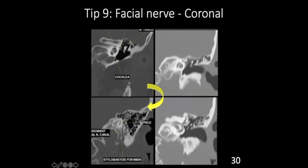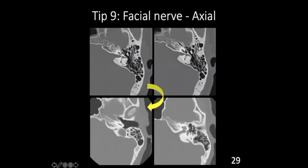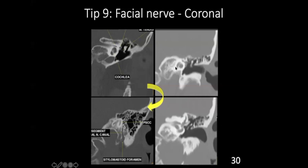In a coronal section, look for the falciform crest in the internal auditory meatus — it runs from the fundus backwards and divides the meatus into superior and inferior parts. You can see the labyrinthine part of the facial nerve running in the meatus, usually superior and anterior to the cochlea. You can see the cochlea's two turns here, and the labyrinthine part of the facial nerve. The first genu of the facial nerve is anteriorly and superiorly located relative to the cochlea — remember it runs anteriorly then comes backwards from the geniculate ganglion.